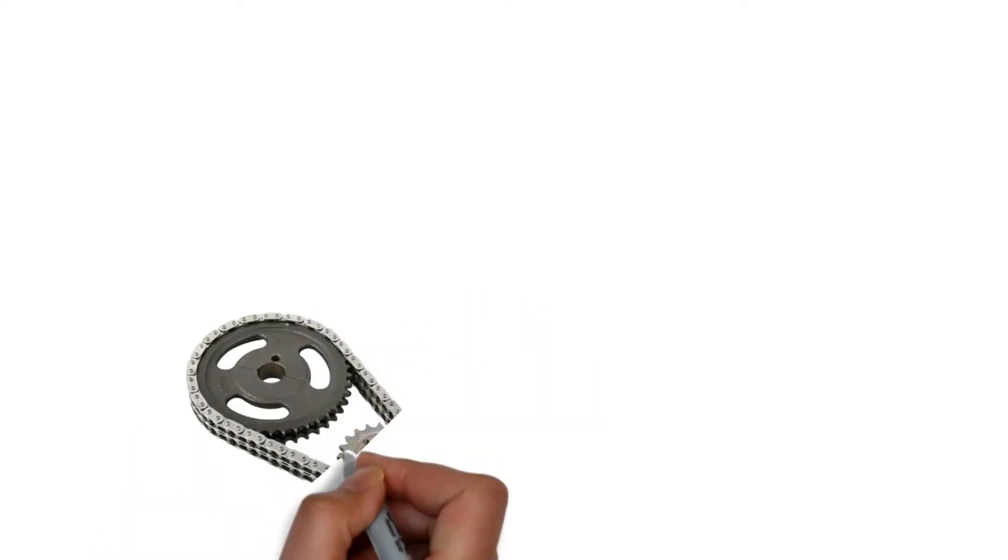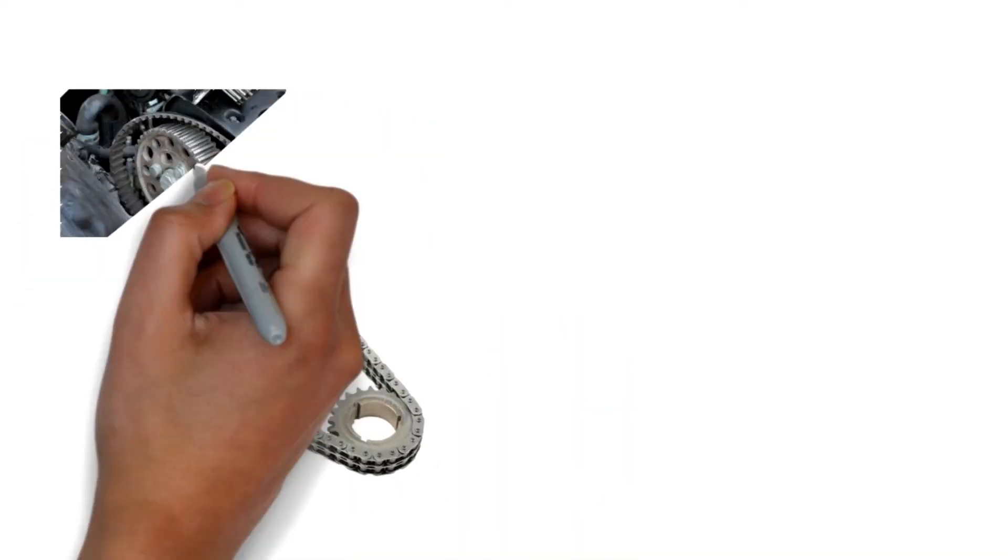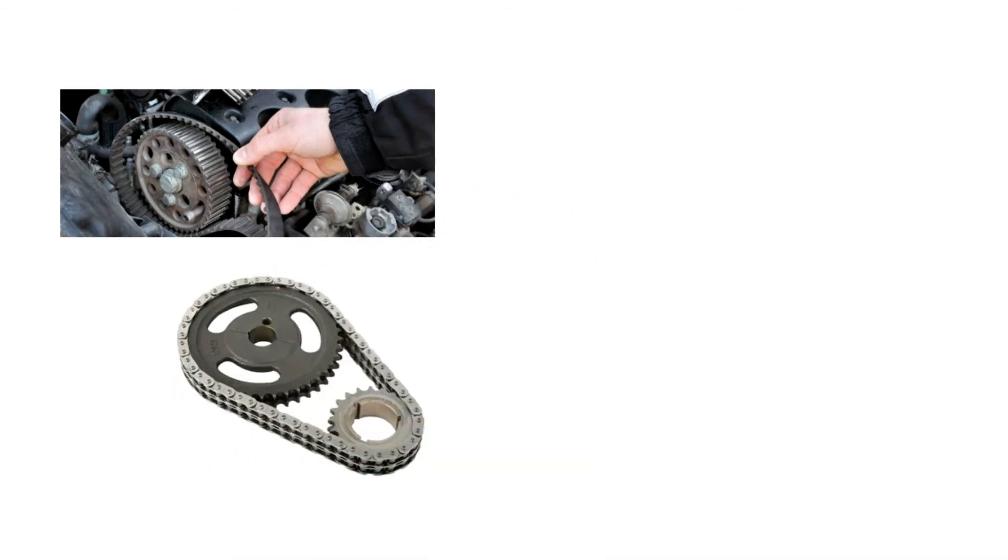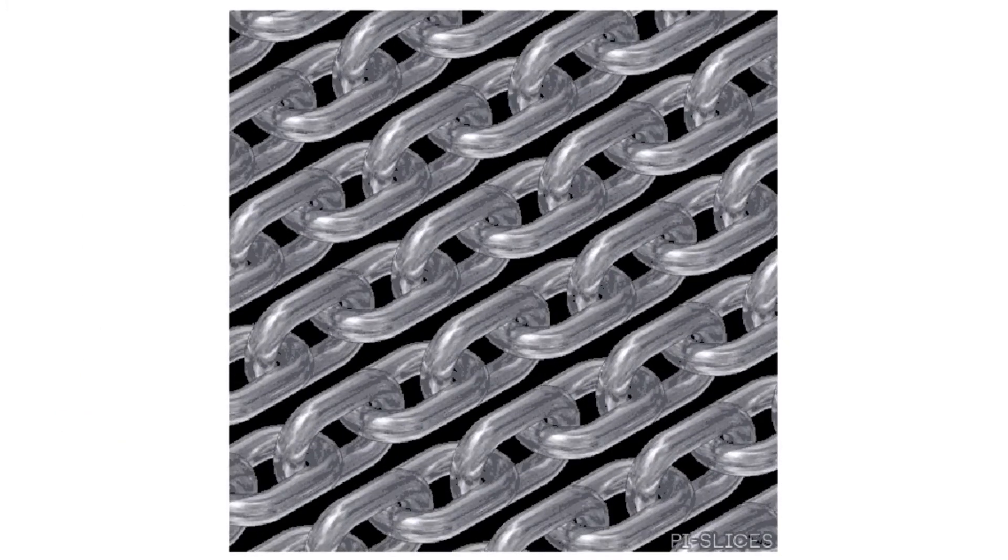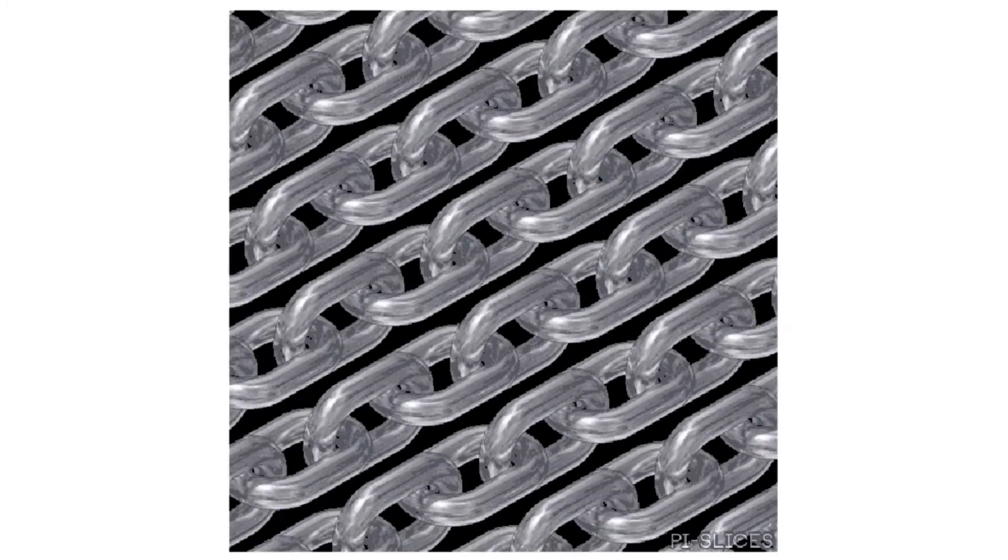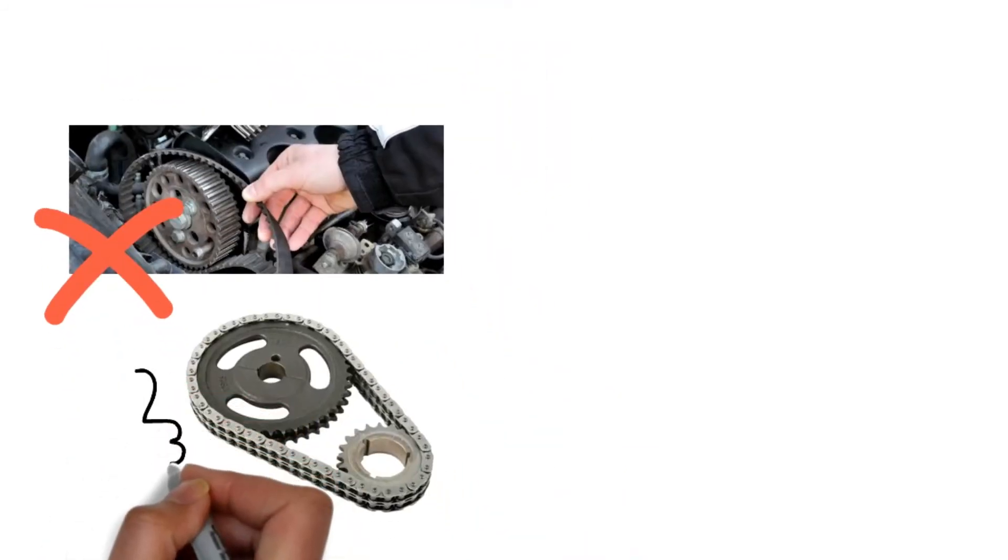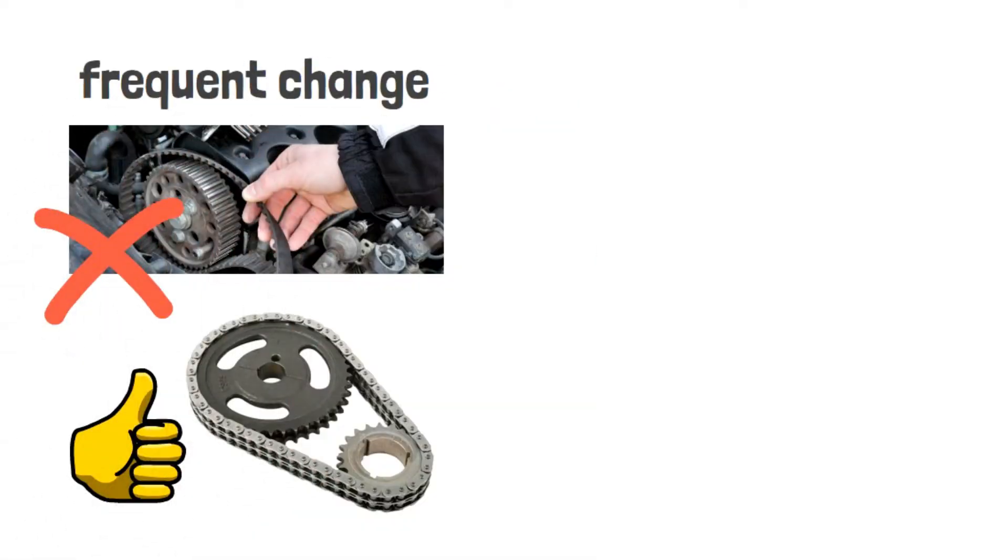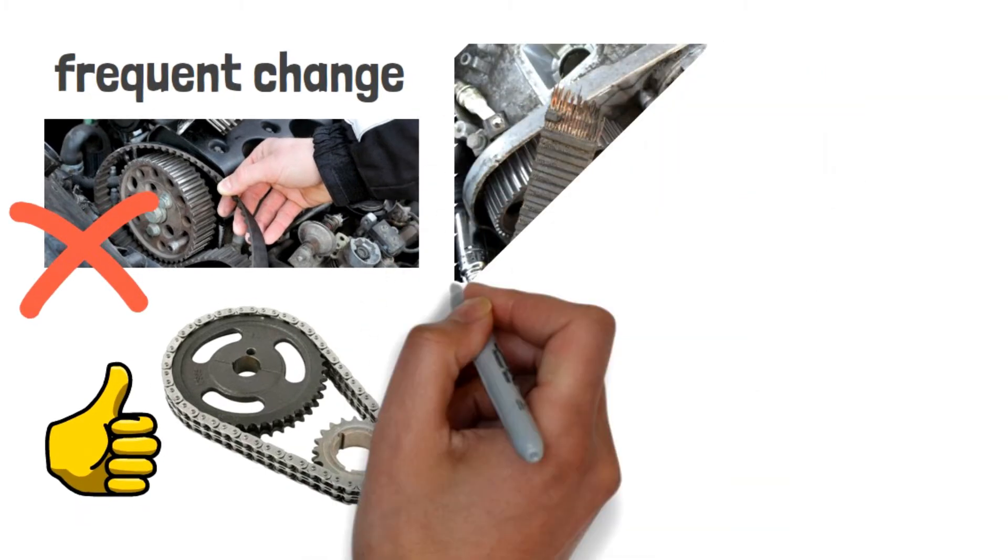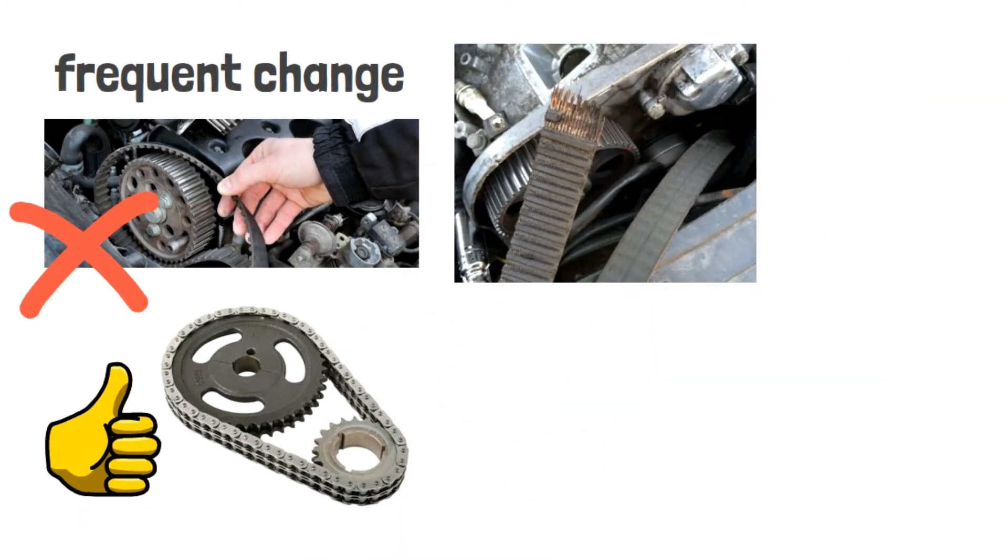Pretty well known that timing chain will last longer than the timing belt, a better solid material of the timing chain. The chain suffers more from wearing and tearing, so for sure it needs replacement at some point during the vehicle life cycle. The creation of a timing chain helps to reduce the inconvenience that timing belt used to have. For example, timing belt requires more frequent change as often as they should be. Apart from that, timing belt is more easily to break and cause serious damage to the engine.